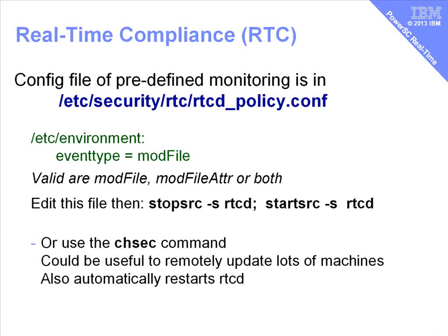By default, there are 278 files that it's monitoring, and they're all defined in a file we can edit - the rtcd_policy.conf file. We actually modified /etc/environment, so for its entry it has two lines: the actual file followed by a colon, and on the next line the event type - 'mod_file'. This means that if the file is modified, we generate the alert. The alternative is 'mod_file_attr', so if somebody changes the read-write permissions for the file. You can have both with a comma in between. Once you've finished editing that file, you have to restart the rtcd daemon with stop and start commands. The alternative is to use the chsec command - this is a bit cumbersome, but if you're trying to remotely update entries on lots of machines it's easier, and it also automatically starts the rtcd daemon for you.